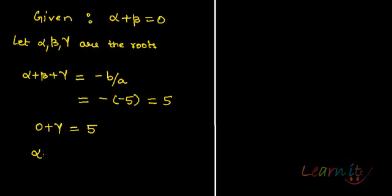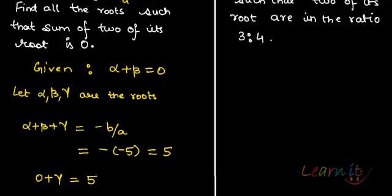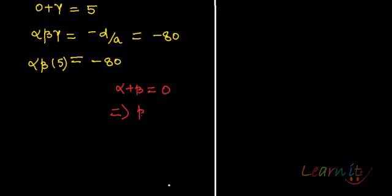Apart from that, we know that α · β · γ = -d/a, which equals -80. Now, since γ = 5, we have α · β · 5 = -80. Also, since α + β = 0, we can take β = -α.